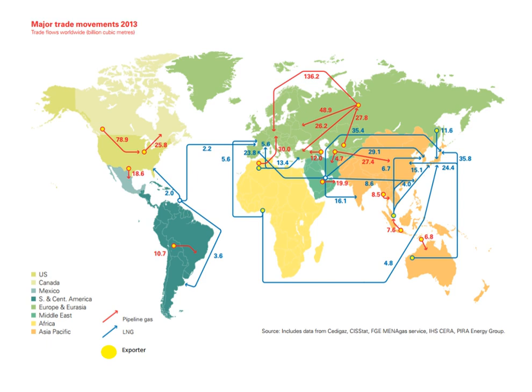In the past, natural gas recovered in the course of recovering petroleum could not be profitably sold, and was simply burned at the oil field in a process known as flaring. Flaring is now illegal in many countries. Higher demand in the last 20 to 30 years has made production of gas associated with oil economically viable. The gas is now sometimes re-injected into the formation for enhanced oil recovery by pressure maintenance, as well as miscible or immiscible flooding. Conservation, re-injection, or flaring of natural gas is primarily dependent on proximity to markets, pipelines, and regulatory restrictions.